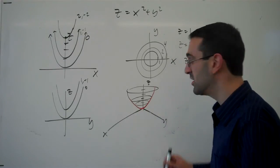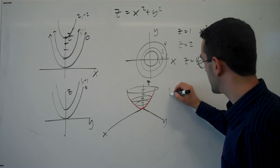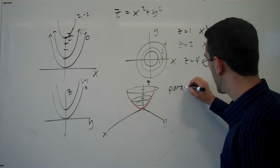And we get an idea now of what this shape looks like. It's going to look like a bowl. The technical name for this is a paraboloid.